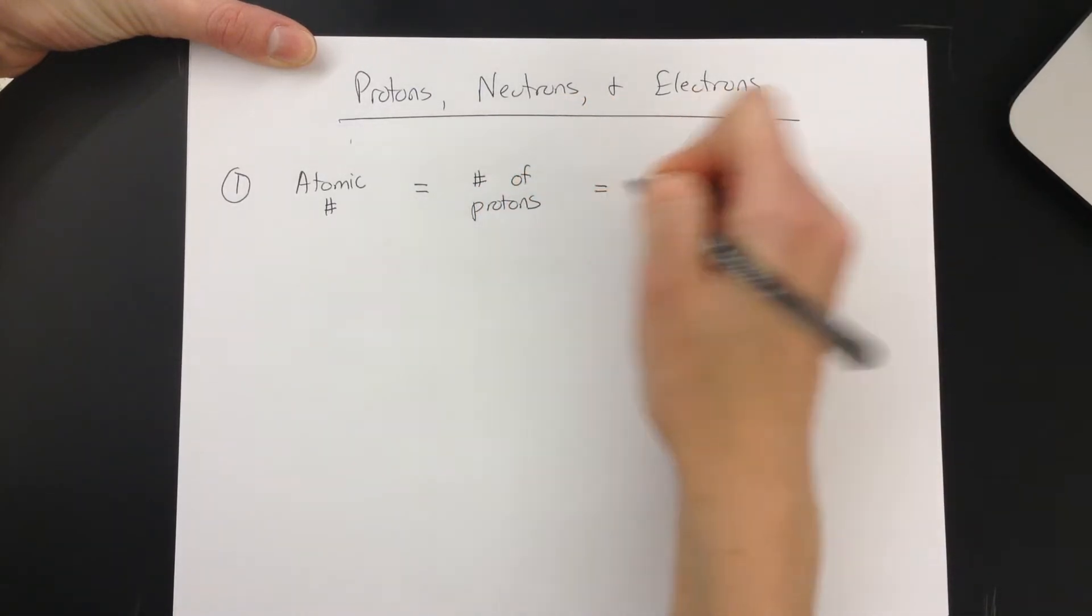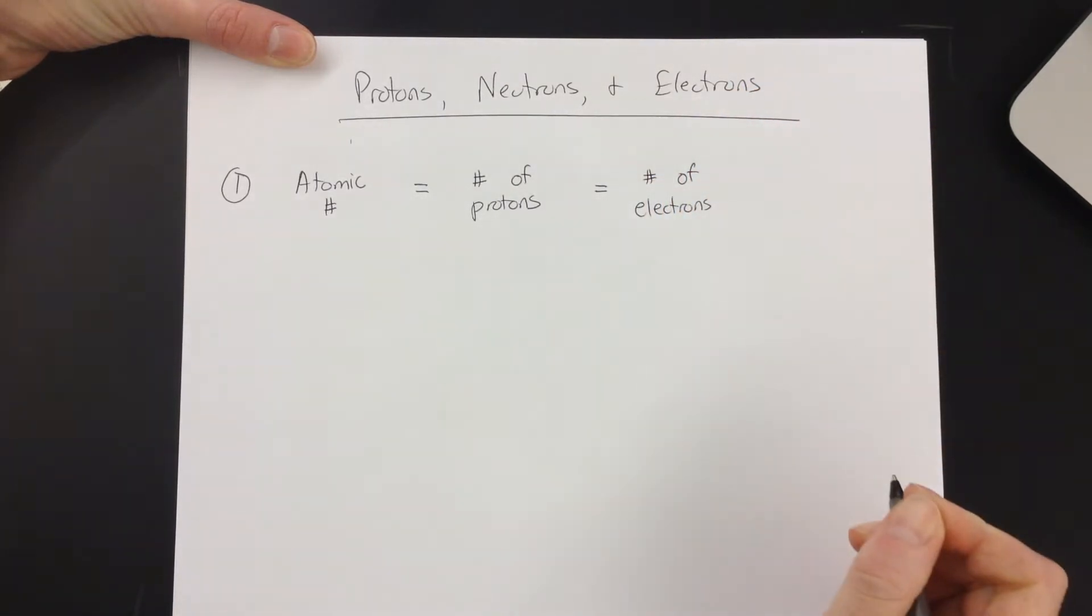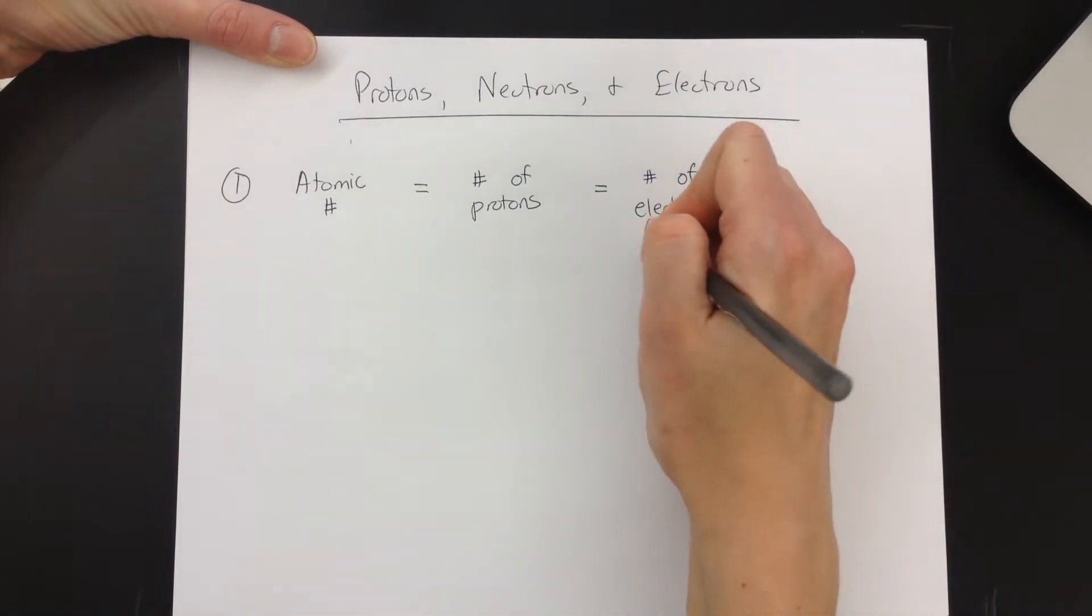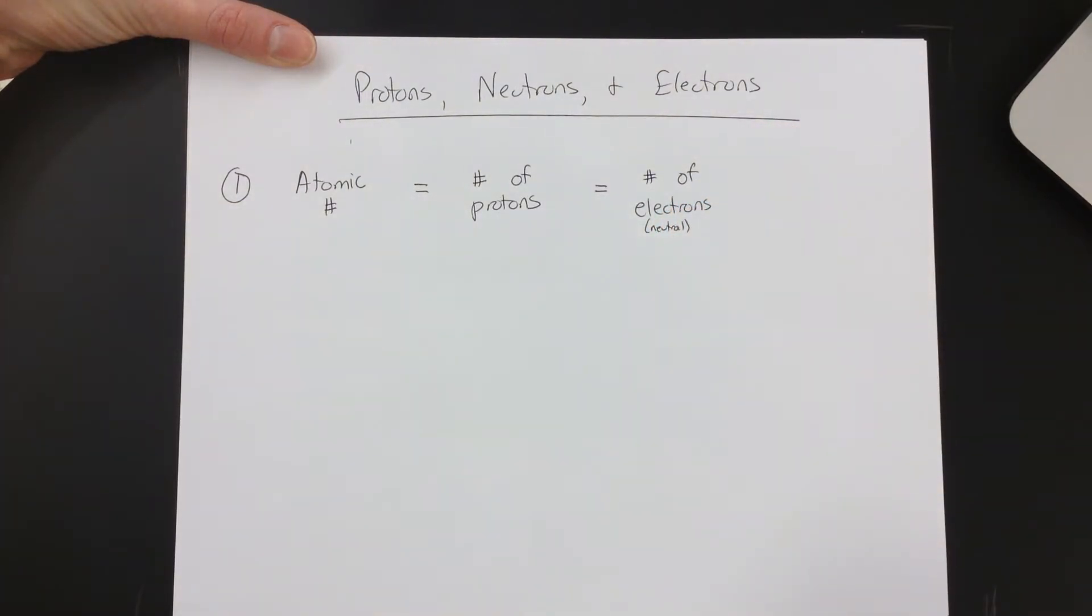And I also know that the atomic number is the number of electrons. Now, I can't remember if we talked about ions yet. Ions sometimes have different numbers of electrons, but a neutral atom, which I'll make a little note here, has the same number of protons as it does electrons. So those three numbers are equal. If you know this one, you know those other two. If you know this one, you know those other two. So one of those gets you the other three.